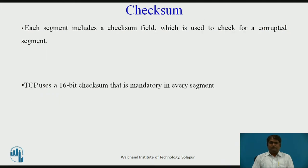Each segment includes a checksum field which is used to check for a corrupted segment. If a segment is corrupted, as detected by an invalid checksum, the segment is discarded by the destination TCP and is considered as lost. TCP uses a 16-bit checksum that is mandatory in every segment.